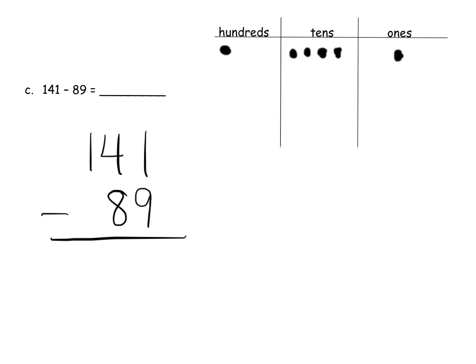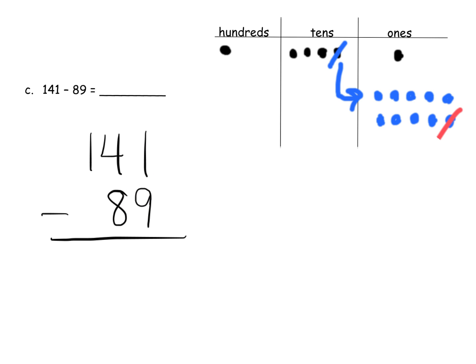Now it says take away nine ones. So we are going to unbundle one of the tens, and that gives us ten ones. Now we can take away nine — cross off nine: one, two, three, four, five, six, seven, eight, nine. And that leaves us with two.